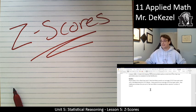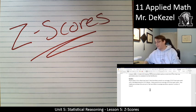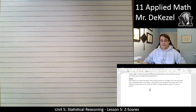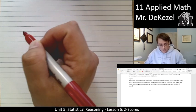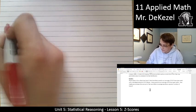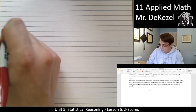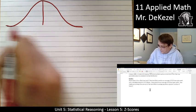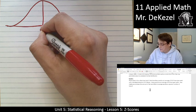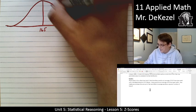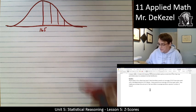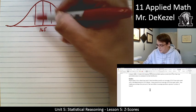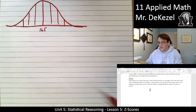Alexis plays in her school jazz band. They have an average of 16.5 hours per week of practice and a standard deviation of 4.2. We draw our normal curve, with 16.5 at the middle, and then one, two, three standard deviations above and one, two, three standard deviations below.